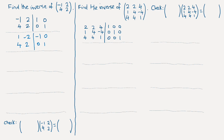Next we need to get a 0 for the bottom left element. We can do that by subtracting 4 times the first row from the second row. So 4 minus 4 gives 0, then 2 minus 4 times minus 2 is 2 plus 8, which is 10. And then 0 minus 4 times minus 1 gives plus 4, and 1 minus 0 gives 1.